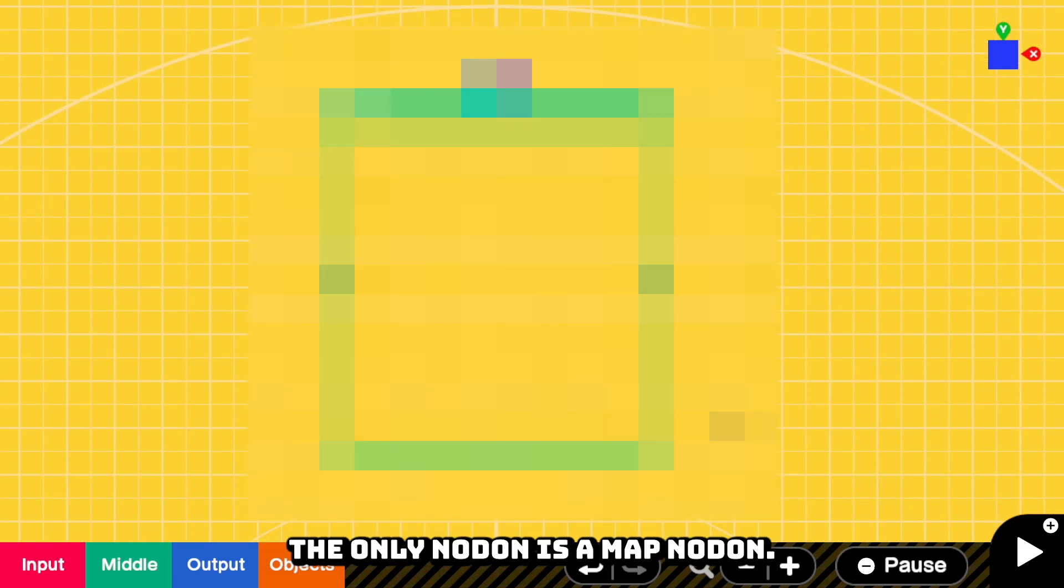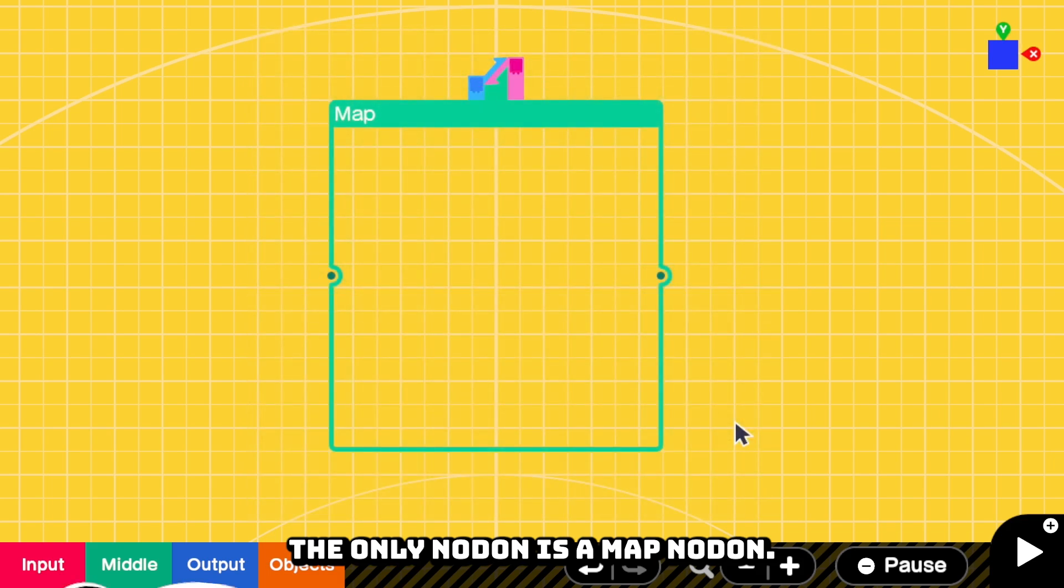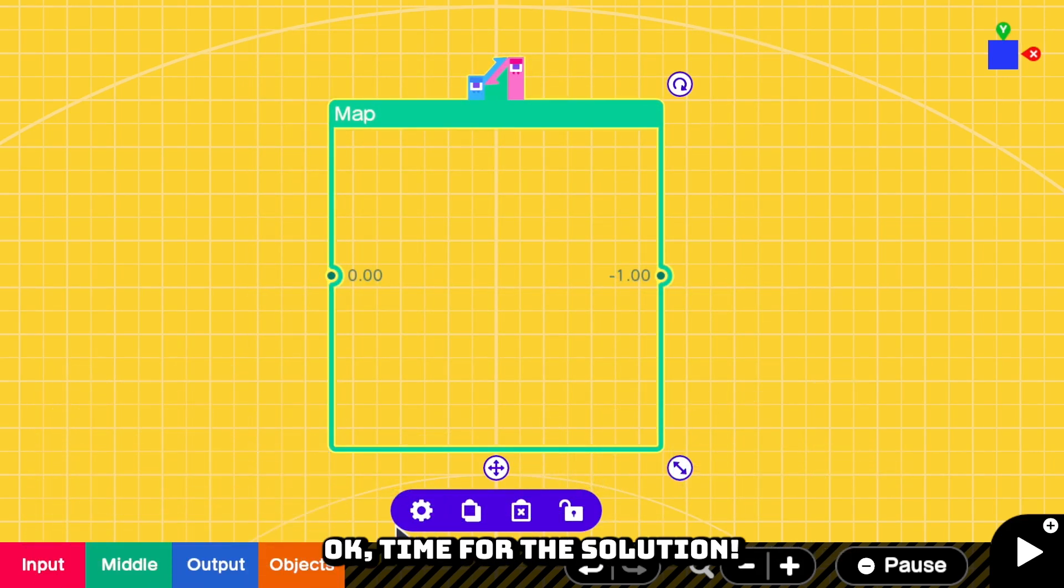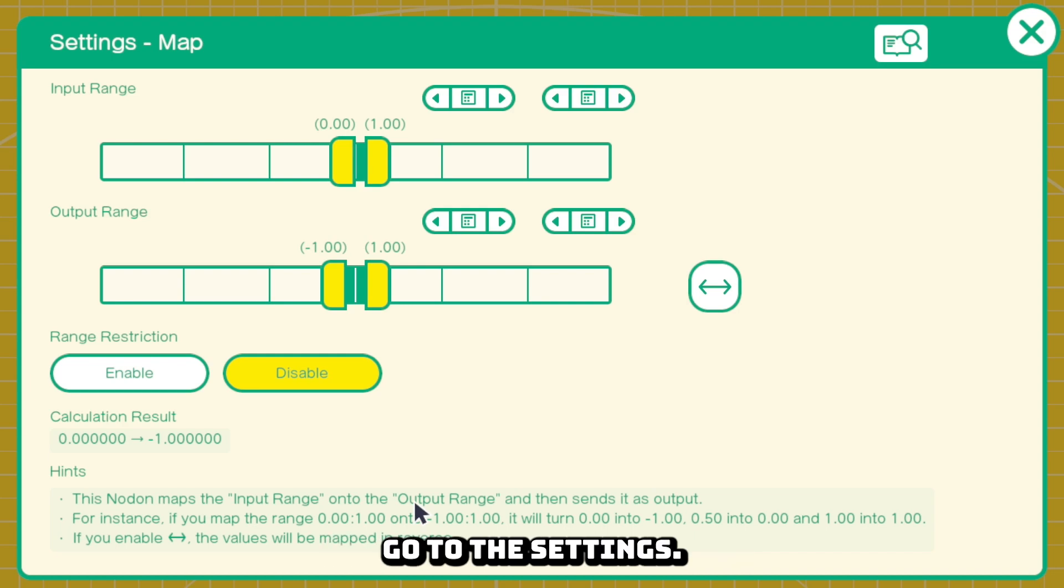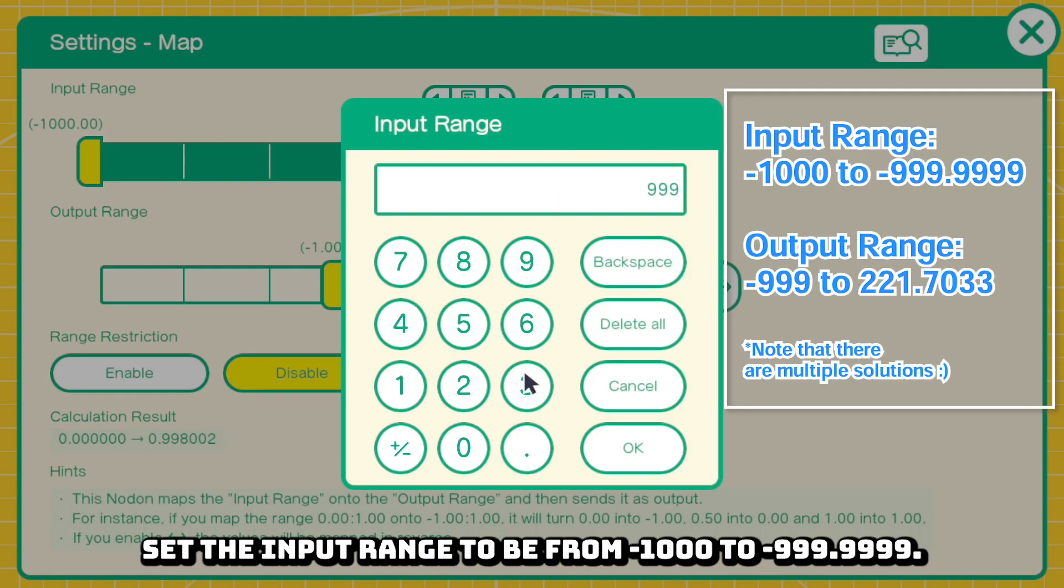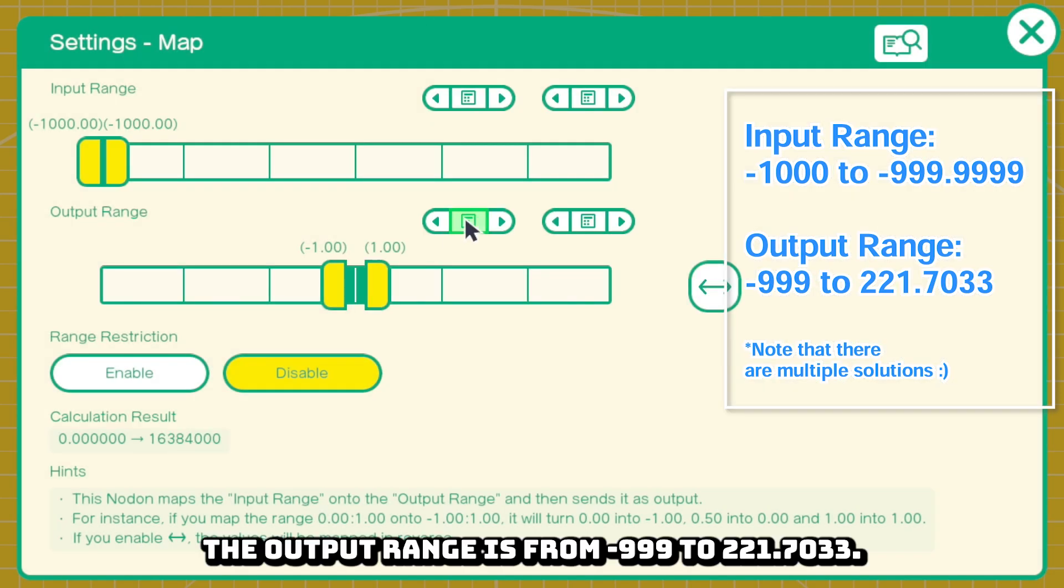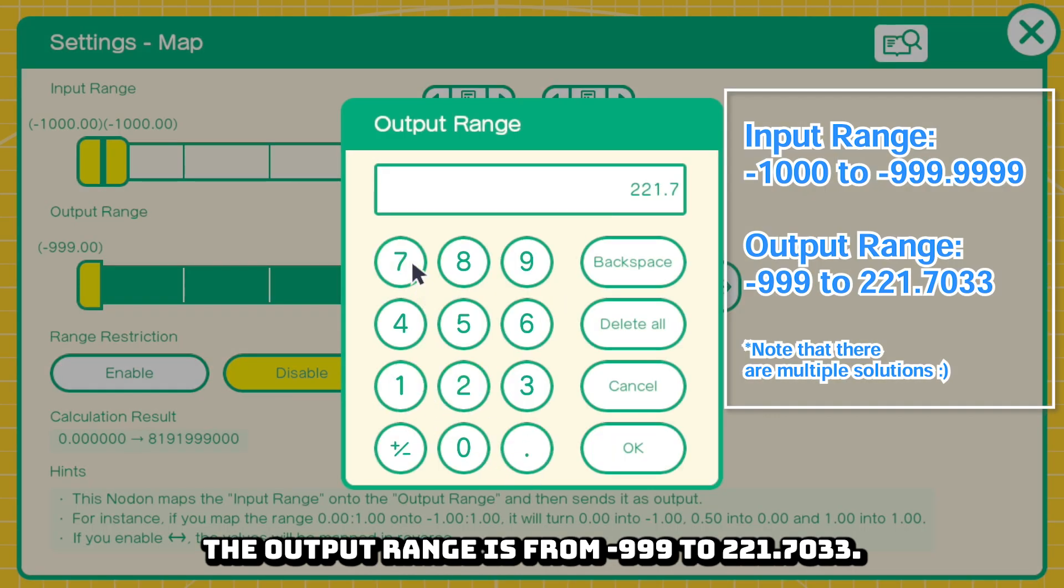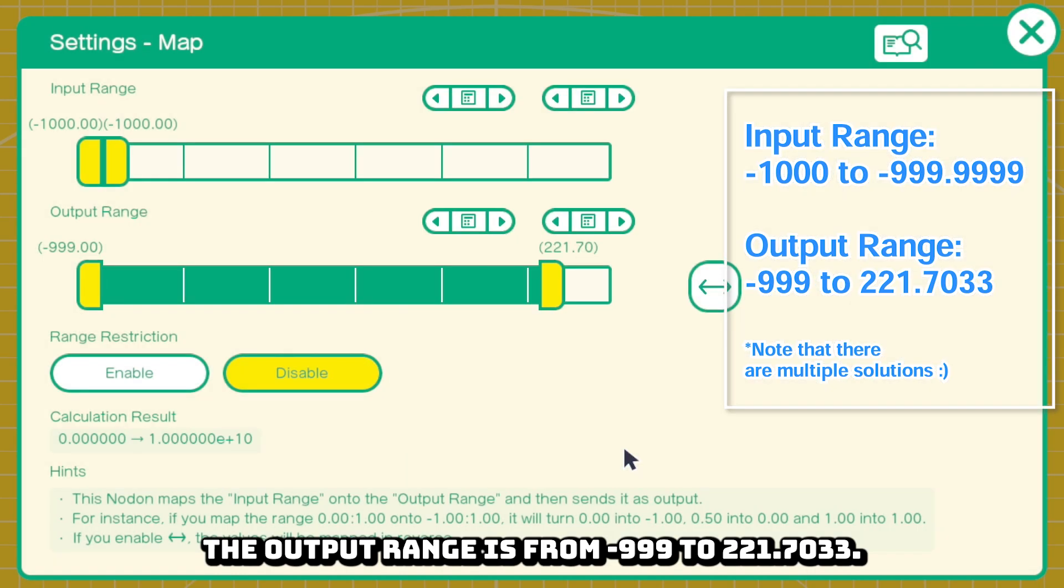The only neuron is map neuron. But how? Okay, time for the solution. Go to the settings, set the input to be from negative 1000 to negative 999.999, the output range is from negative 999 to 221.7033. Close the settings and now you can get 10 billions.